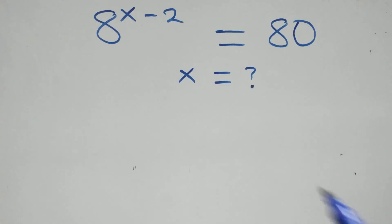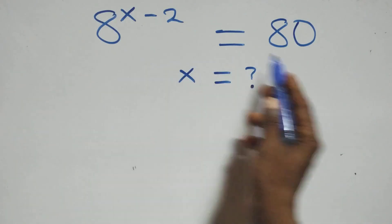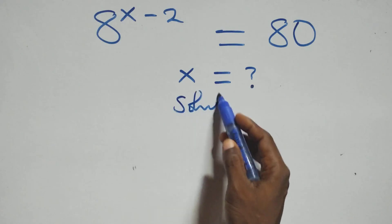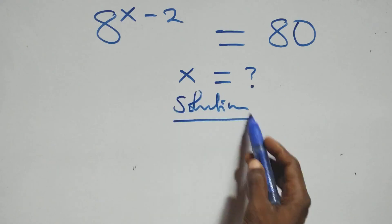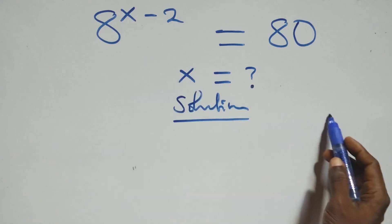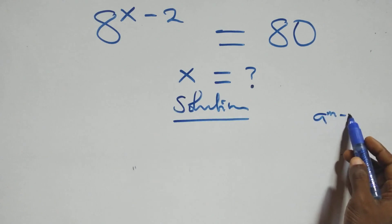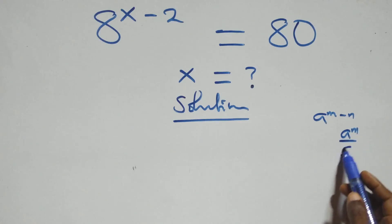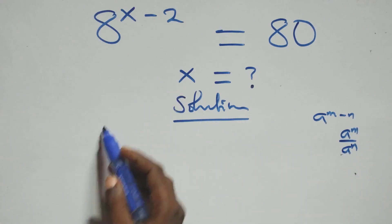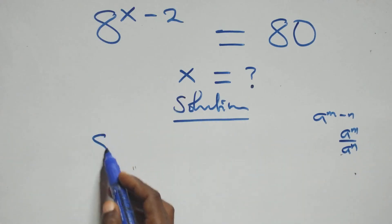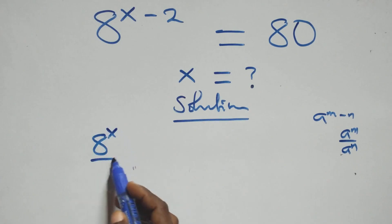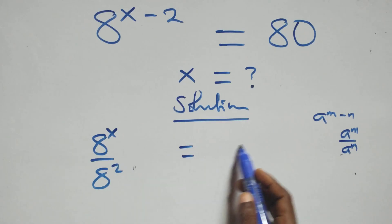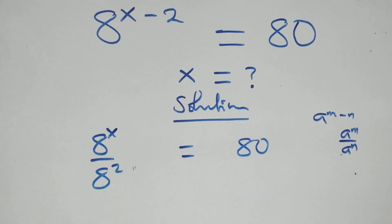Hello, you are welcome. How to solve this nice exponential equation. What we have here: a raised to power n minus n is the same thing as a raised to power n over a raised to power n. For this here, we have a raised to power x over 8 squared equals 80.